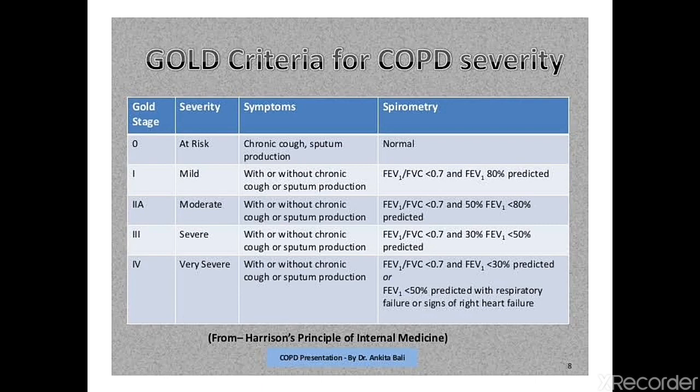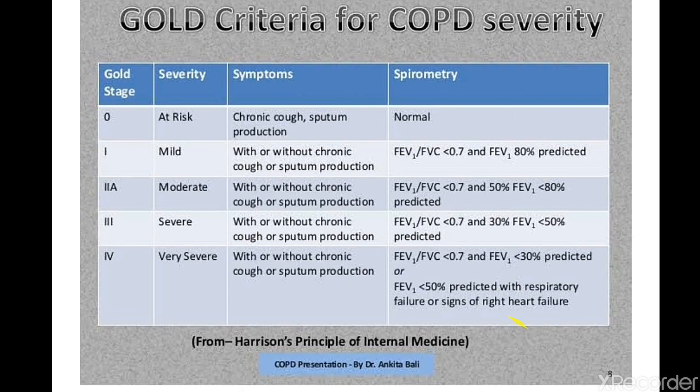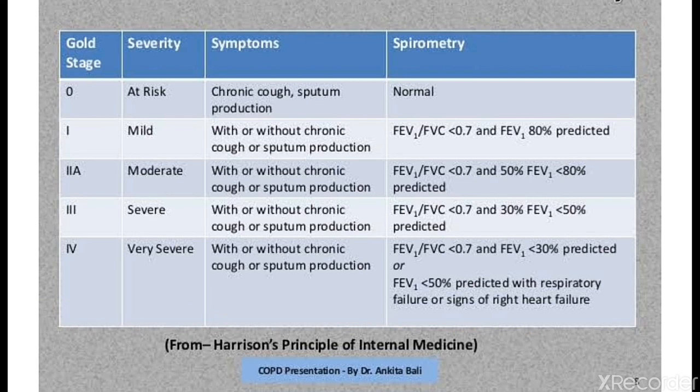There is a GOLD criteria for the severity of COPD with stages zero to four. Stage zero means the patient is at risk — disease has not developed yet — with chronic cough and sputum production as symptoms and normal spirometry. Stage one is mild severity, with or without chronic cough or sputum production. The GOLD criteria is based on the FEV1 to FVC ratio: 80% or above is mild, less than 80% is moderate, less than 50% is severe Stage 3, and less than 30% is very severe Stage 4.